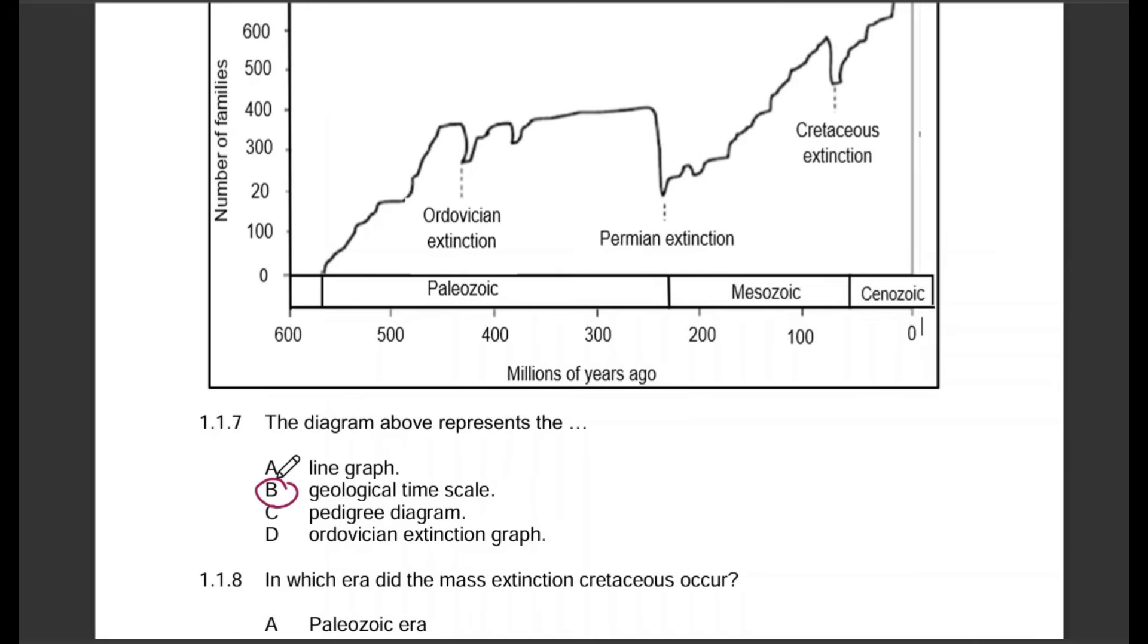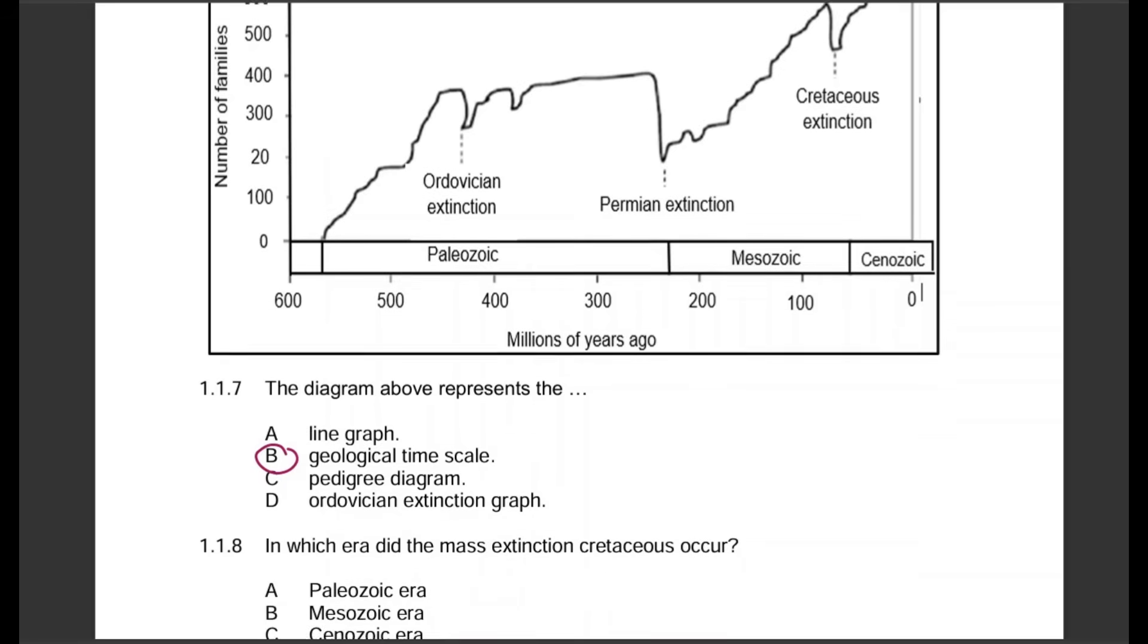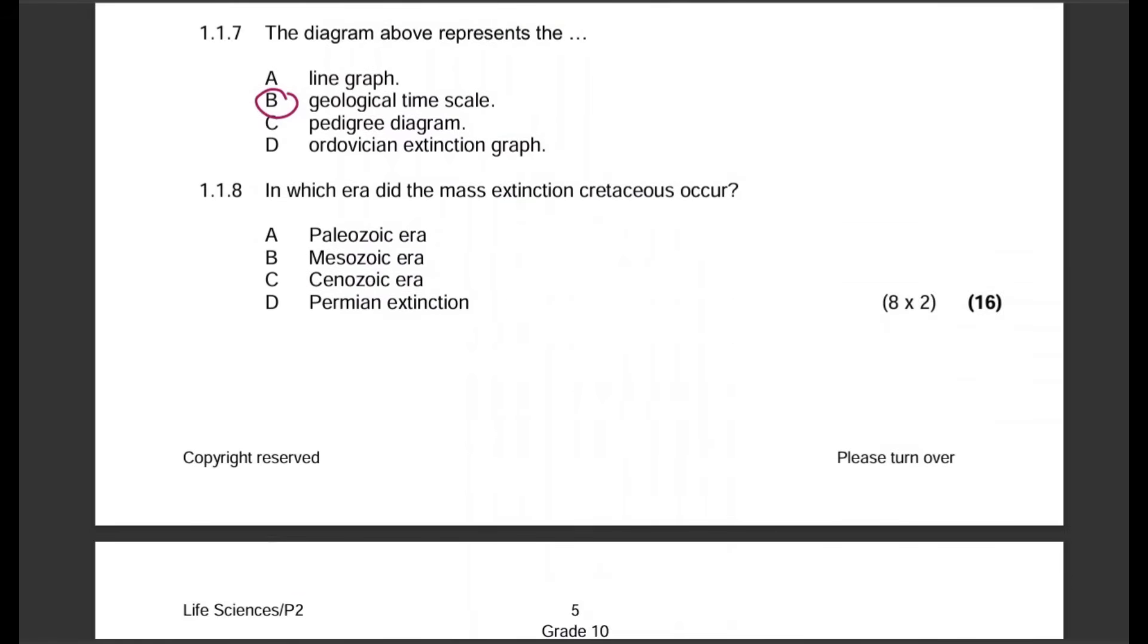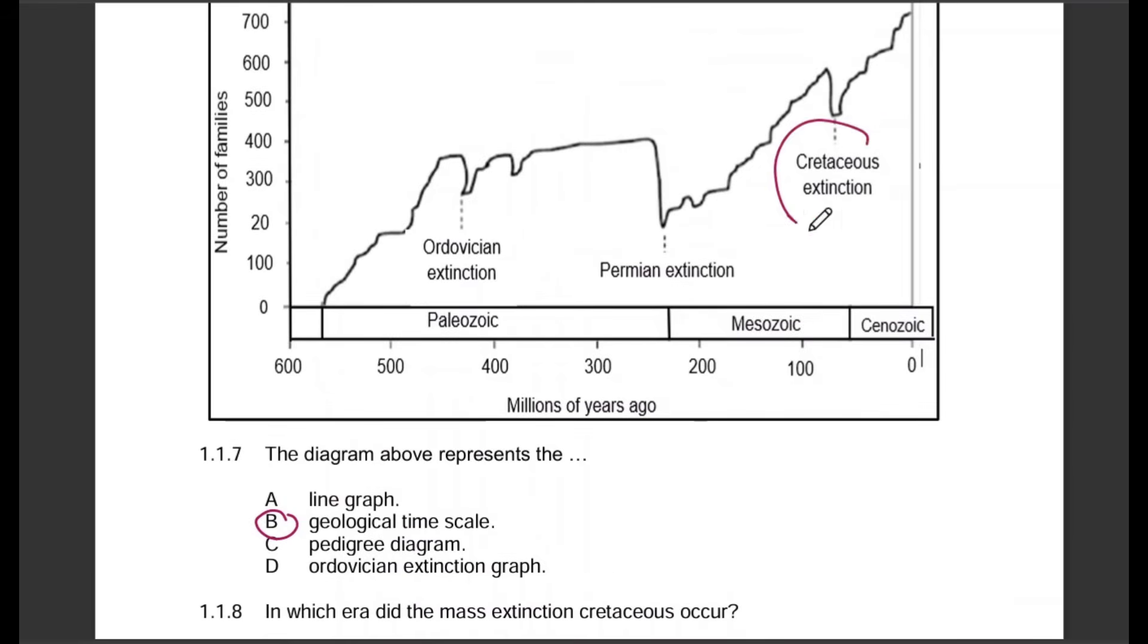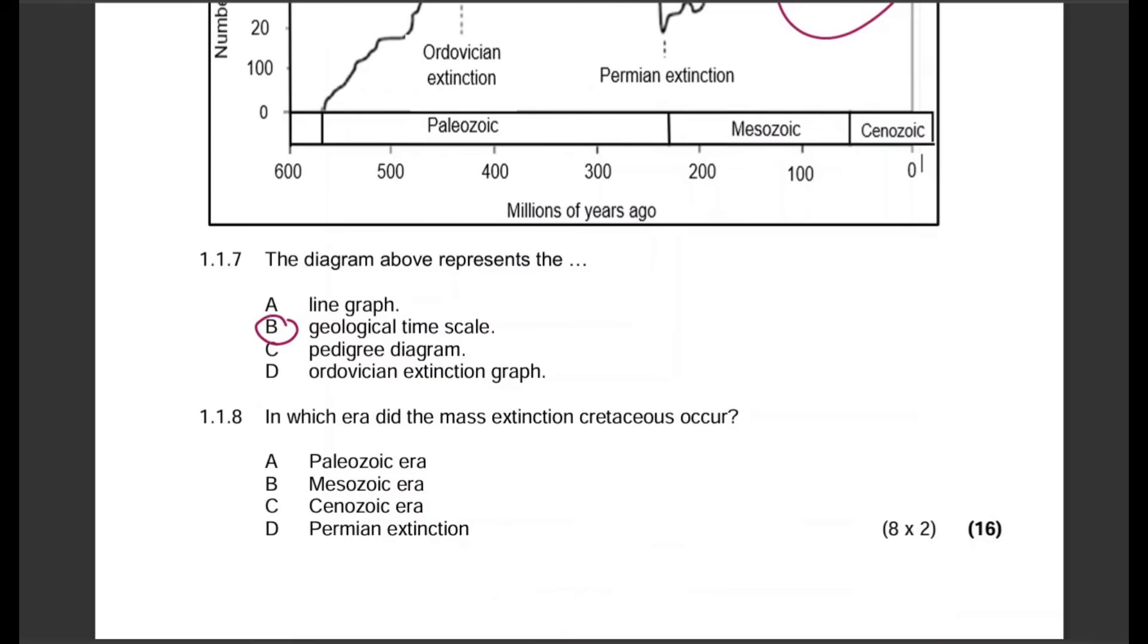Question 1.1.8: In which era did the mass extinction Cretaceous occur? This is very simple, you go back to the diagram. This is what they are talking about. In which era did it occur? So that is B, the Mesozoic era.